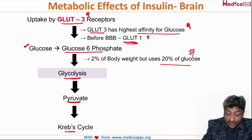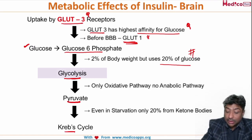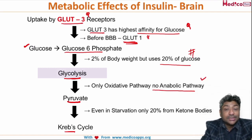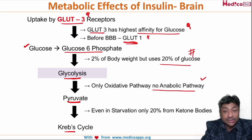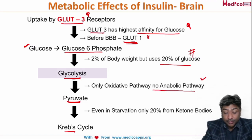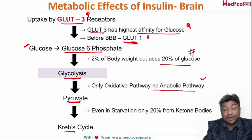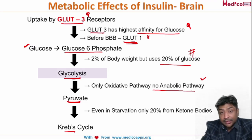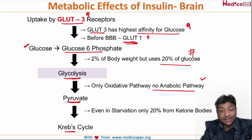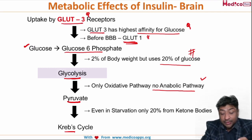Glycolysis produces pyruvate, and pyruvate enters the Krebs cycle via acetyl-CoA to produce energy. This is the key to answering the question: because brain has no anabolic pathway, neither glycogen synthesis, nor HMP shunt, nor fatty acid synthesis take place in brain.